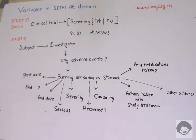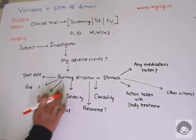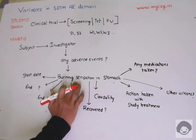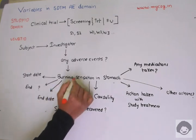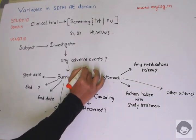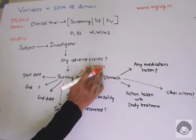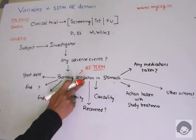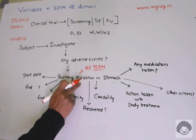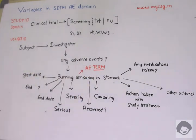In every SDTM domain, most variables carry the domain prefix. Since this is the AE domain, most variables are prefixed with 'AE'. To store the description of the adverse event as reported by the subject, we use the variable AETERM — this stores the verbatim text used to describe the event. Next, for the start date, we use the variable AESTDTC — where 'AE' is the prefix, 'ST' stands for start, and 'DTC' stands for date-time character.